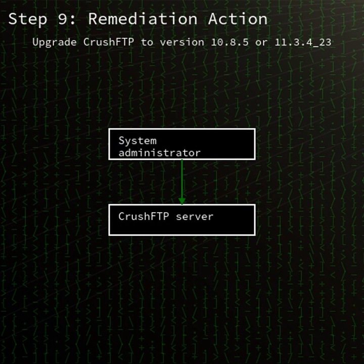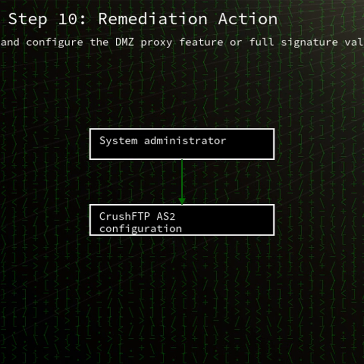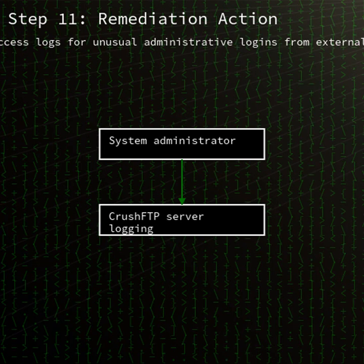Administrators should immediately update CrushFTP to version 10.8.5 or 11.3.423 or later. If immediate patching is not possible, enable the DMZ proxy feature as a temporary mitigation. Monitor server logs for unauthorized administrative access and review network traffic for anomalous AS2 requests. Staying current with vendor updates and applying security best practices will help defend against this critical threat.